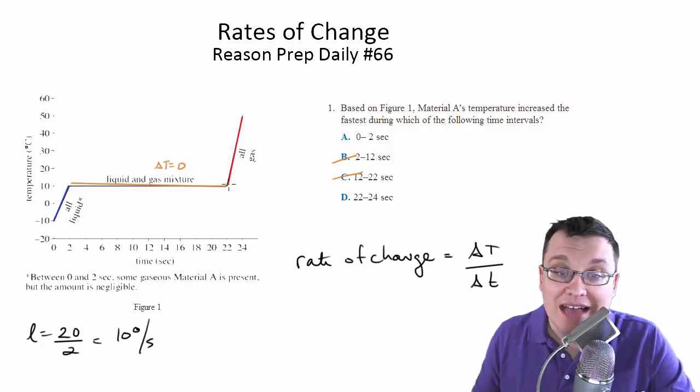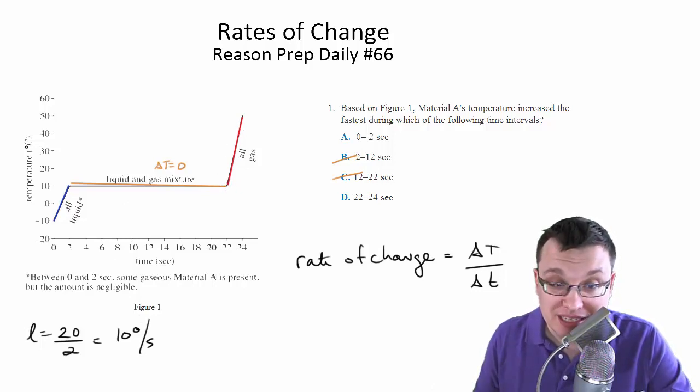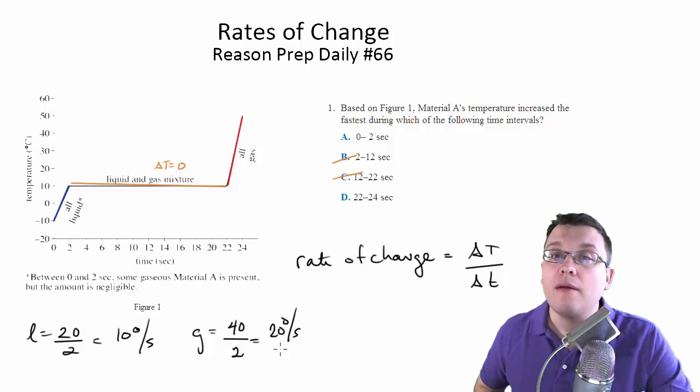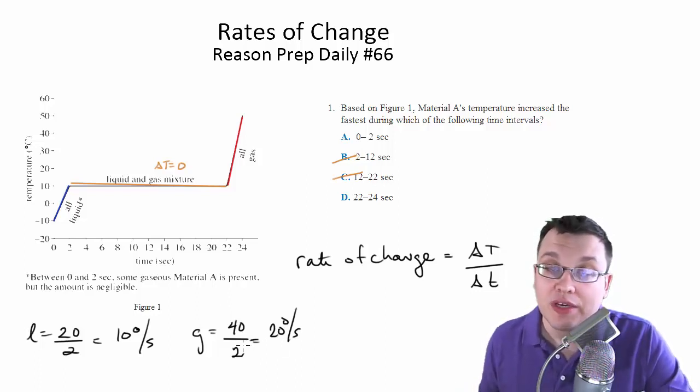On the other hand, the gas is also changing in 2 seconds, but it's going from, let's say, 10 to about 50. So that's going to be a change of 40 in the temperature in 2 seconds. So it's 20 degrees per second. So much more significant. In fact, double the increase in the temperature in this interval.